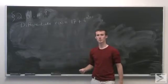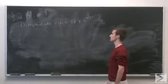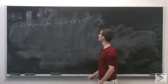Problem number nine of section 2.6 asks us to differentiate the function r(x) equals 17 plus 6 to the x squared plus 1.